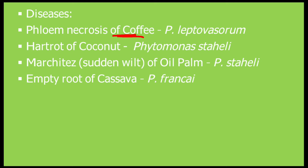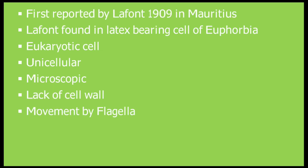The genus Phytomonas causes the following diseases: Heart rot of Coconut, caused by Phytomonas staheli. Sudden wilt of Oil Palm, caused by Phytomonas staheli. Empty root of Cassava, caused by Phytomonas françai.